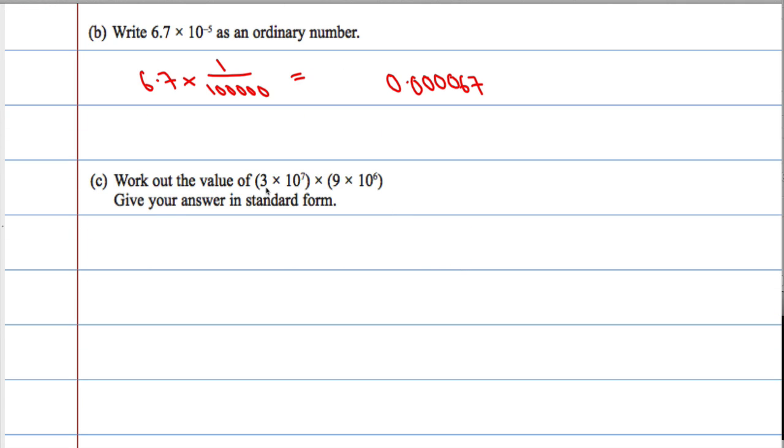And then Part C, work out the value of 3 by 10 to the 7 by 9 by 10 to the 6. Hopefully you know that multiplication, the order is irrelevant, so that's the same as 3 times 9 times 10 to the 7 by 10 to the 6.